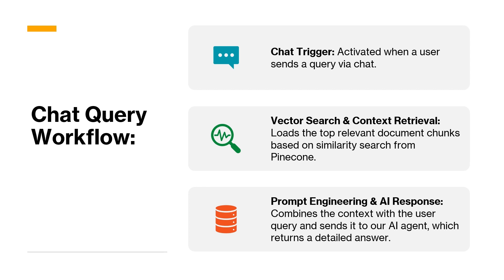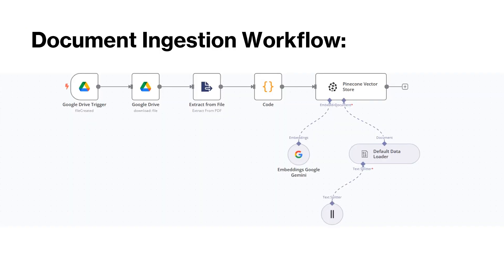The second workflow is the chat query workflow. A chat trigger node is activated when a user sends a query. The query is sent to the vector search and context retrieval node, which loads the top relevant document chunks based on similarity search from Pinecone. Once we have the relevant documents and the query, we send them to a code node that creates a prompt. The combined document chunks and user query are then sent to the AI agent, which returns detailed answers.